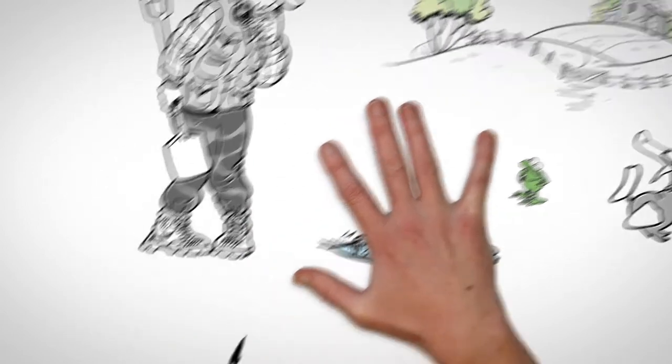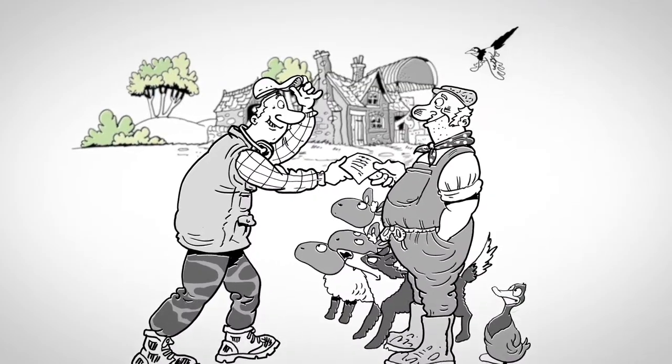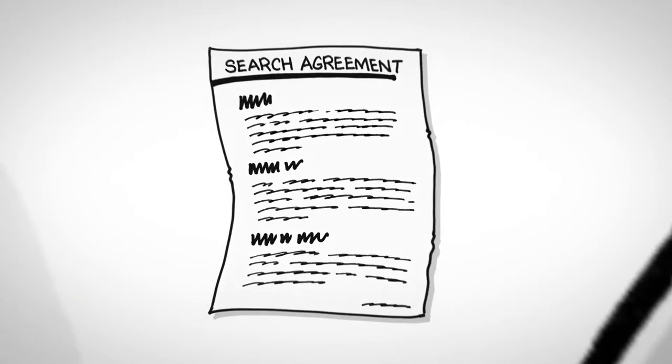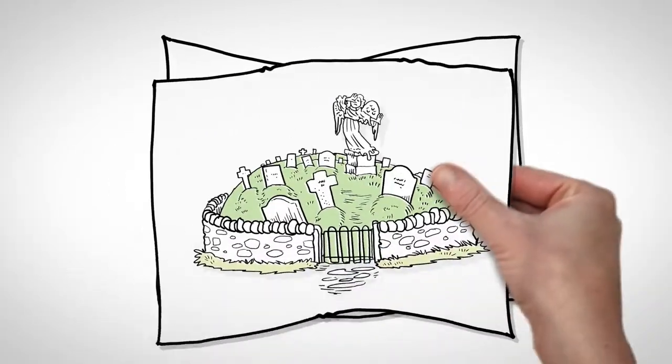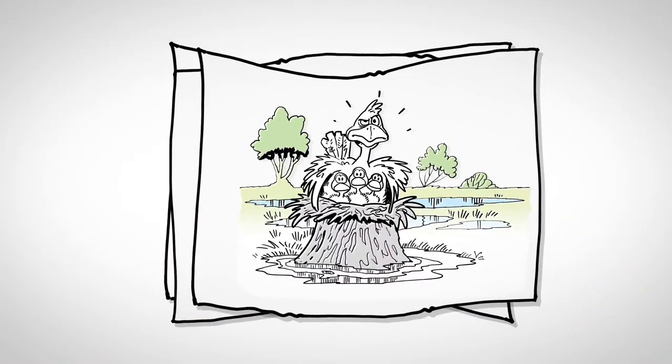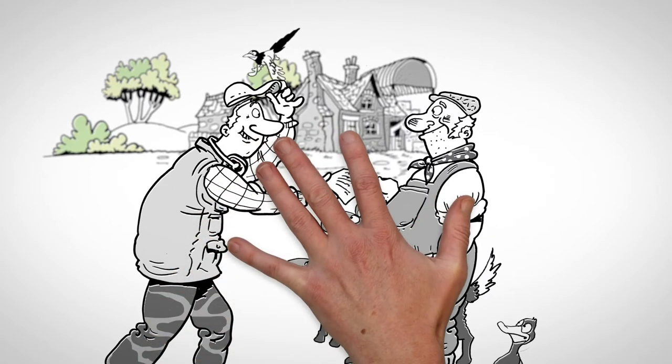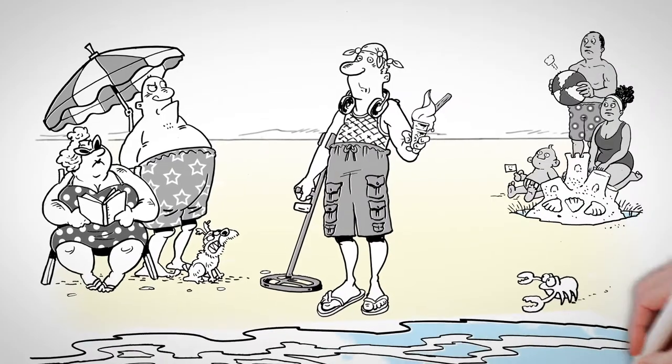He must have permission from the landowner. Where land is leased, he'll need to ask for the tenant and landowner's permission and never detect on or near a protected site. If in doubt, he must check with a landowner. And remember, all land has an owner.